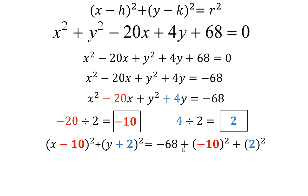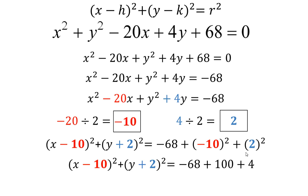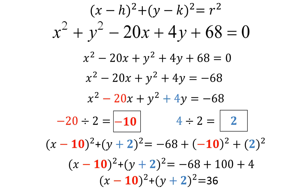All I'm going to do is simplify the right-hand side of the equation, and everything else stays the same. Negative 68 plus negative 10 squared is 100, and 2 squared is 4. I add those numbers together to get my final answer — this will be the equation of the circle. From here, you should be able to identify the center and the radius.